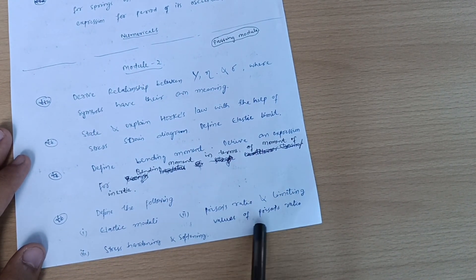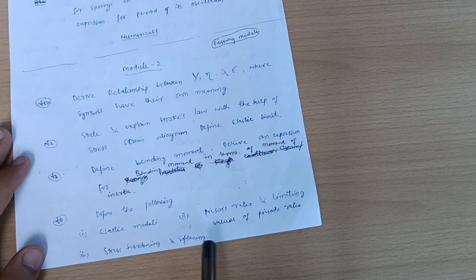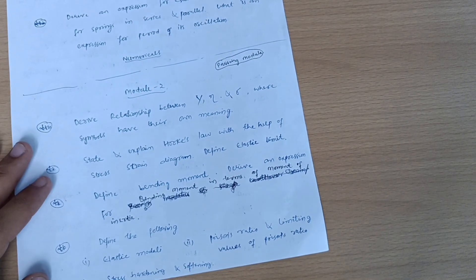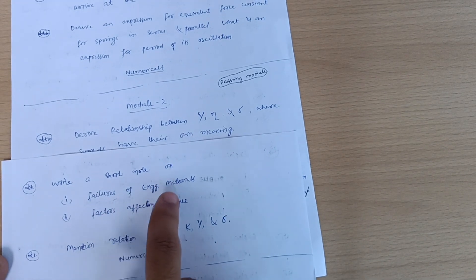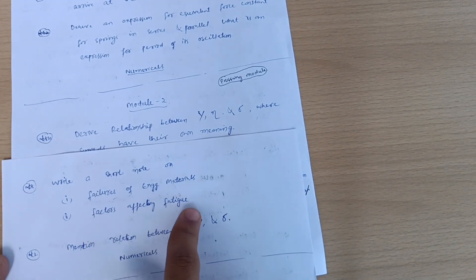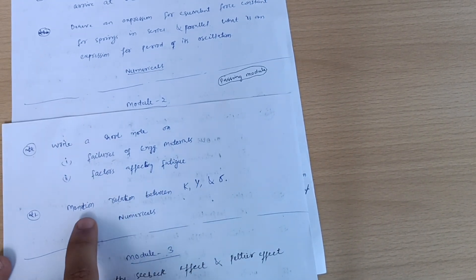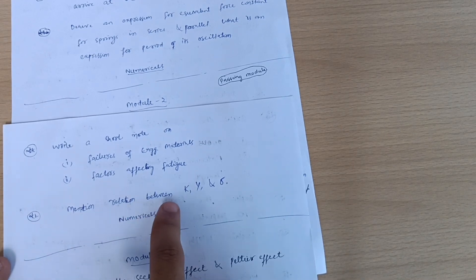And define the following elastic moduli: Poisson's ratio limit and limiting values of Poisson's ratio, stress hardening and softening. Next is write a short note on failures of engineering materials, factors affecting fatigue, and also you should focus on this much.